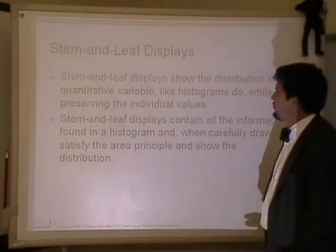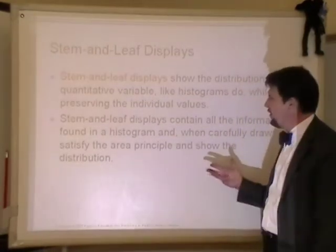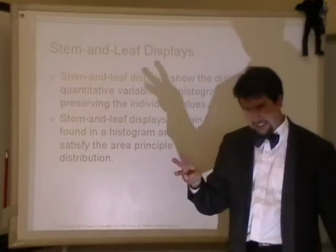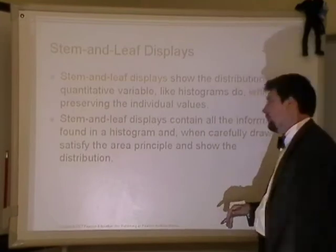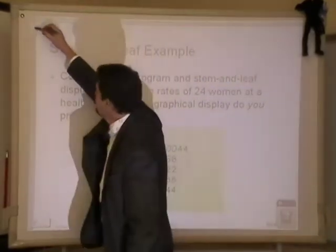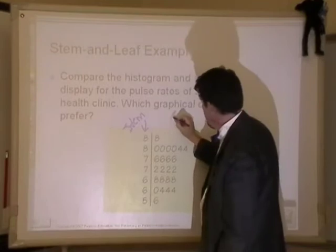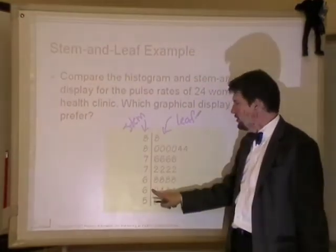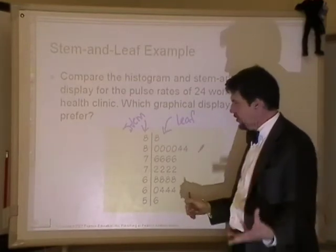Stem and leaf display — what's a stem and leaf display? It's another method for showing this data, and we've been making these since kindergarten. In a stem and leaf display, this side is the stem and this side is the leaf. The leaf can only have one digit in it; the stem can have more than one digit. So stems could be 8, 9, 10, 11, even 104 — that's fine. The leaf can only have one digit.